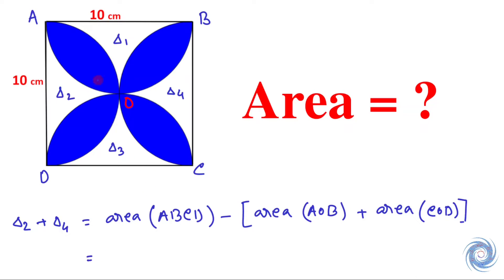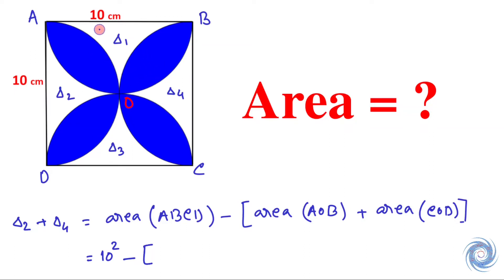Since the square is of side 10 cm, the area of the square is 100 cm². AOB is a semicircular area, and the diameter of the circle is 10 cm, so the radius is 5 cm.